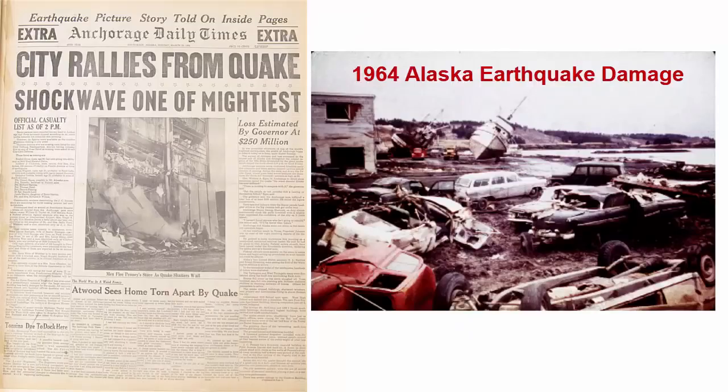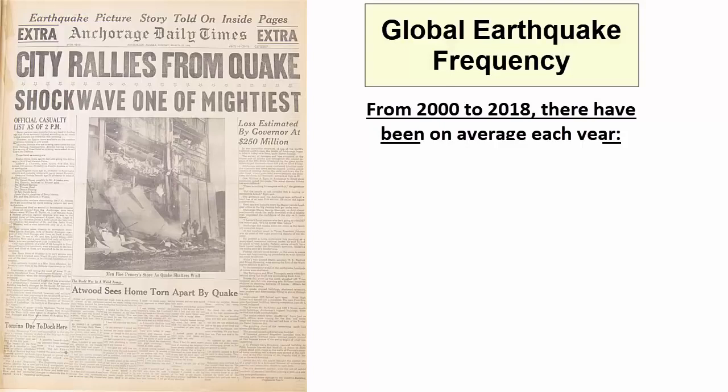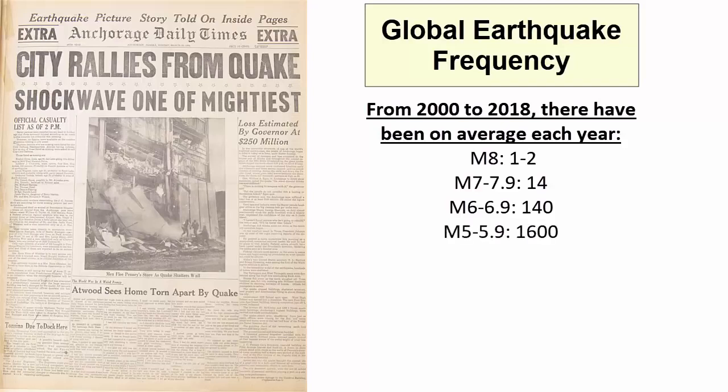One of the common comments I receive from students the week we study earthquakes in class is surprised at the coincidence that while we're studying earthquakes, there happens to be an earthquake somewhere in the world that impacted an urban center and is written up in the news. Is it really a coincidence? From the USGS Earthquake Hazards Program website, from 2000 to 2018 there have been on average 1 to 2 magnitude 8 earthquakes per year, 14 magnitude 7 to 7.9, approximately 140 magnitude 6 to 6.9, and approximately 1600 magnitude 5 to 5.9. You can see that the annual number seems to jump 10 times for each magnitude drop.